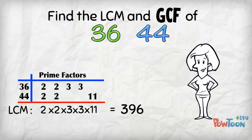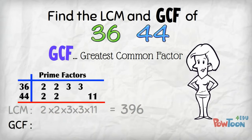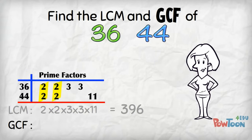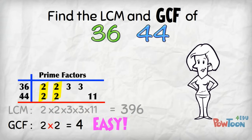Now let's do the greatest common factor! If a prime factor is common to both numbers listed, then it is used in our GCF. 2 is in both lists of prime factors — here and here. 3 is not common, nor is 11. List the common factors: 2 and 2. Then multiply the common prime factors to get the GCF. So, 2 × 2 — the GCF is 4. Isn't that easy?